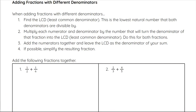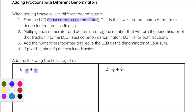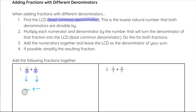Now we are going to look at how we add fractions when we have different denominators. There are four steps that we will take. First, we'll find the LCD, which is our least common denominator. This is the lowest natural number that both denominators are divisible by. For example, in this first one we have one-half plus one-sixth. Two and six are not the same number, so we do not have common denominators right now. We need to turn each of those fractions into fractions that have the same denominator, and we are going to use multiplication to do that.